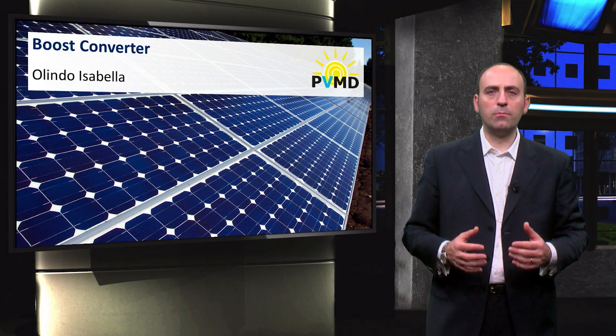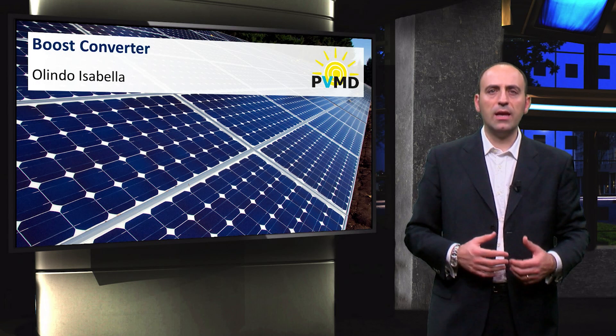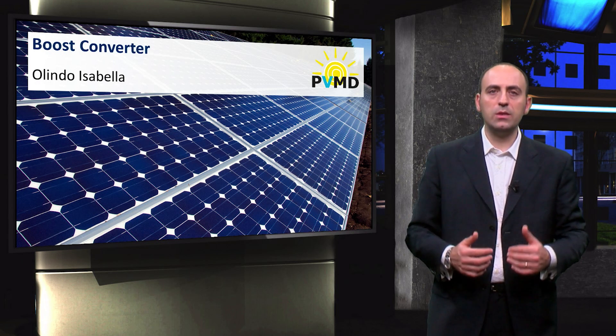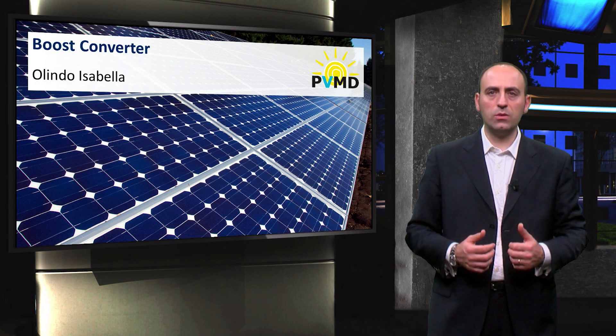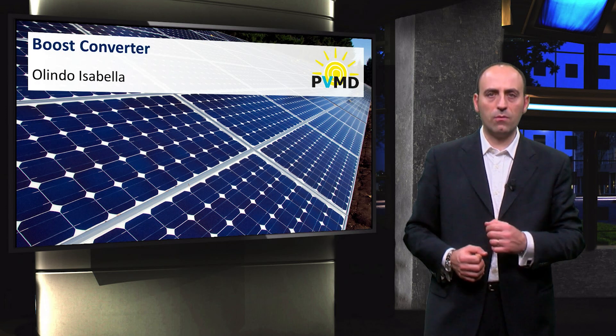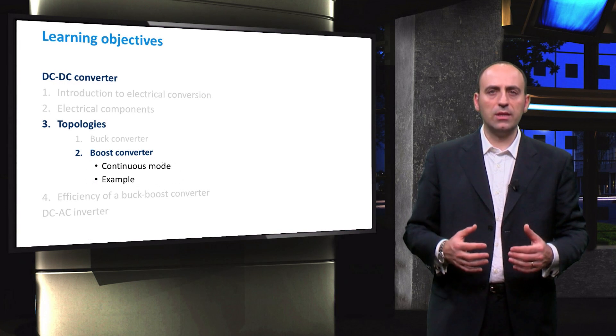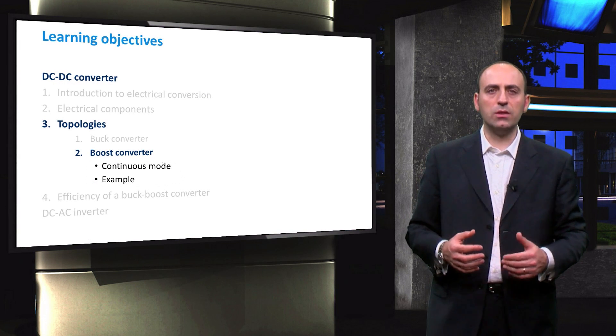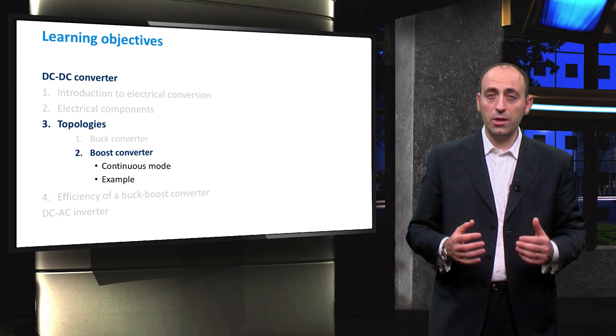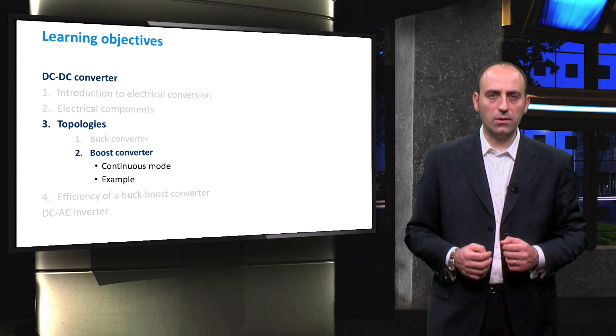In the previous video, we saw that the buck converter can decrease the voltage coming from the PV side. Now, on the contrary, we will see how to increase the input DC voltage by means of the boost converter, also called the step-up converter. In this video, we will show you its electrical circuit and operations in continuous mode. After the theory, we shall present a simple example to better understand it.